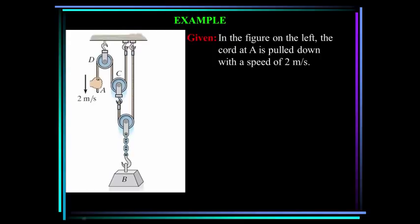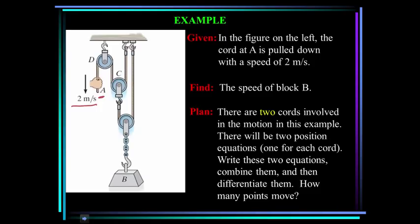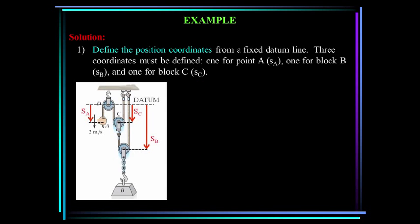In this figure, the cord at A is pulled down with a speed of 2 meters per second. Find the speed of block B. There are two cords involved in the motion in this example, so there will be two position equations, one for each cord. Write these two equations, combine them, and then differentiate them. Define the position coordinates from a fixed datum line. Three coordinates must be defined: one for point A, one for block B, and one for block C.